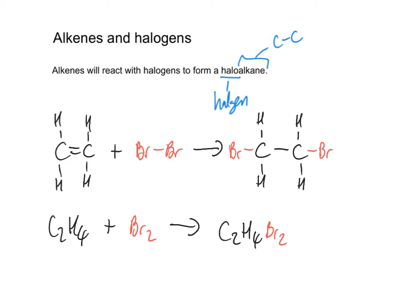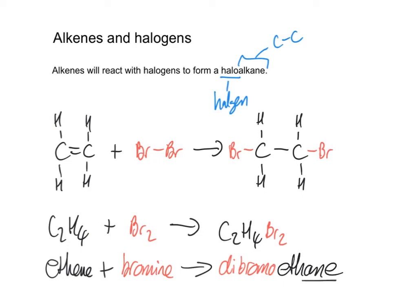So if I write this name out, write the word equation out. So the word equation is ethene plus bromine becomes dibromoethane. Dibromo, which means two bromines. And we can see the two bromines there. So dibromoethane. Ethene. And you can see that it's become ethane because the double bond has broken, making the single bond.